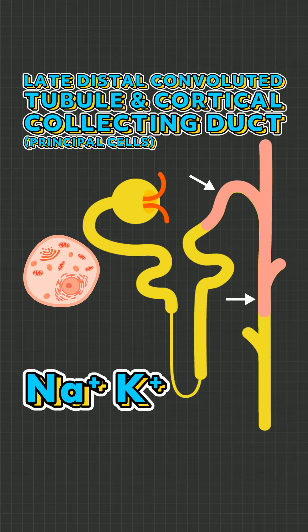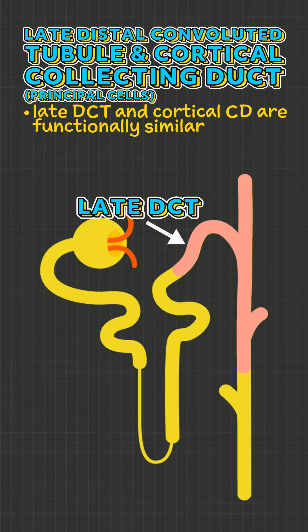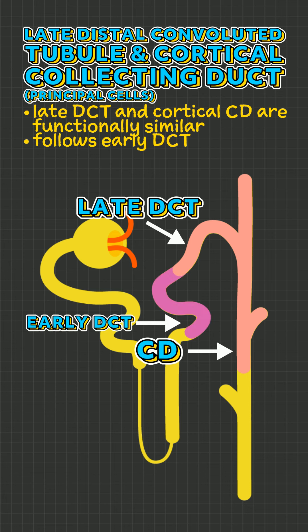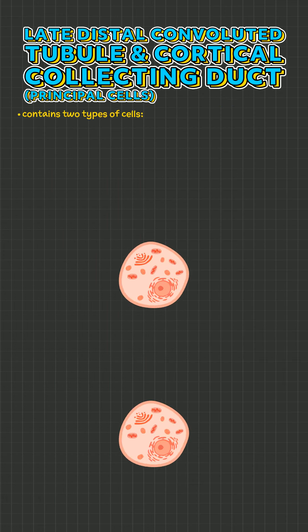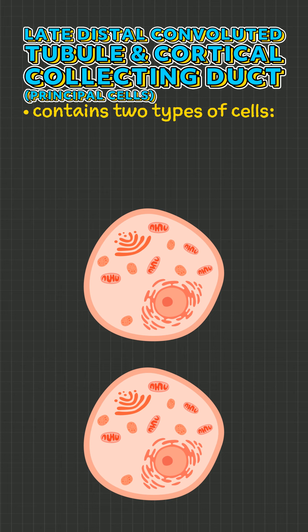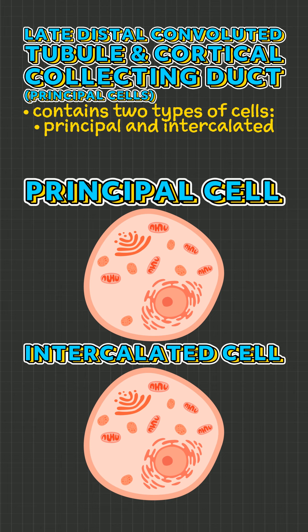The Late Distal Convoluted Tubule and Cortical Collecting Duct are functionally similar. This section of the nephron immediately follows the early distal convoluted tubule, is located in the kidney's cortex, and contains two types of cells: principal and intercalated.